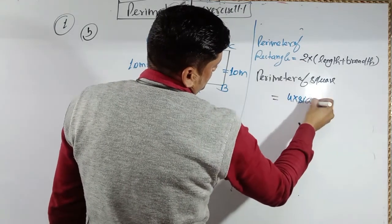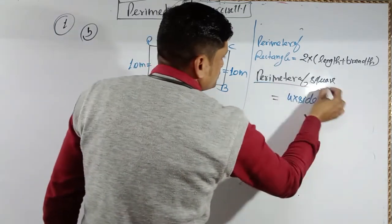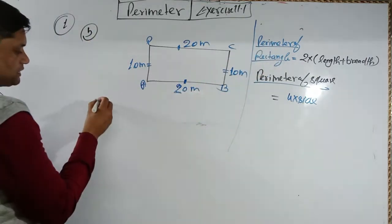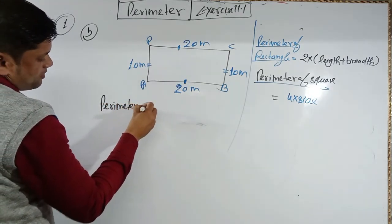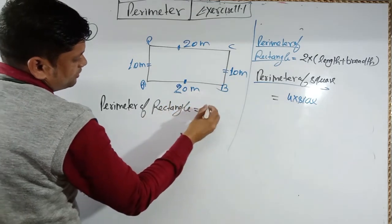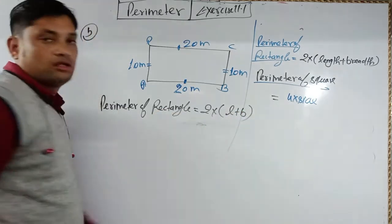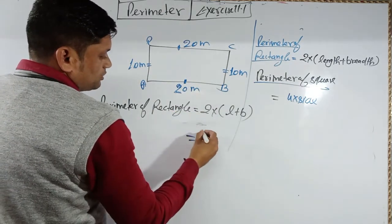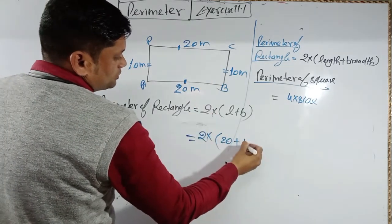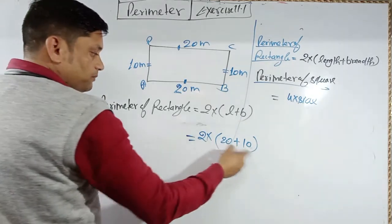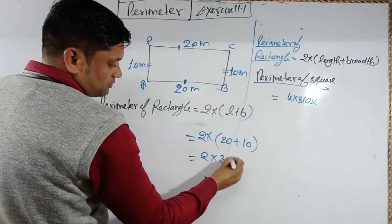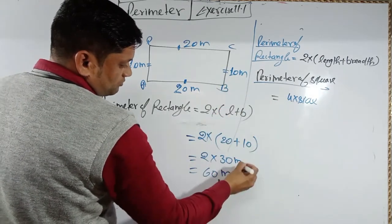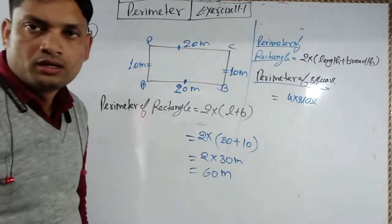For a square, perimeter = 4 × side, because all sides are equal. For this rectangle: perimeter = 2 × (20 + 10) = 2 × 30 = 60 meters. So the answer is 60 meters.